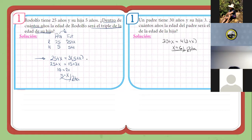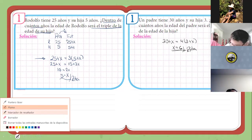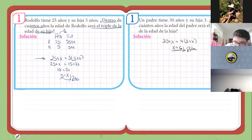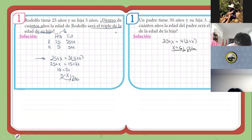Vamos al ejercicio 2. ¿A alguien le falta copiar? Si no, avanzamos. Como les comentaba, básicamente estamos haciendo exactamente lo mismo, solo que ahora estamos poniéndolo con edades. Todo relacionado con edades.